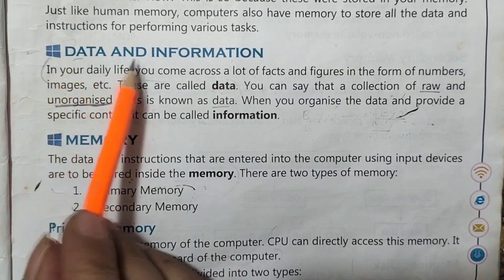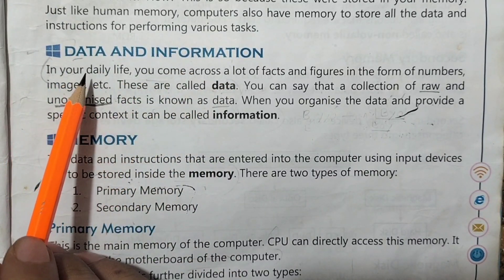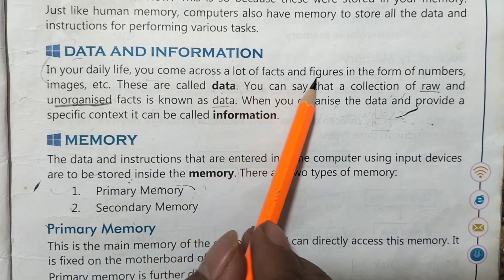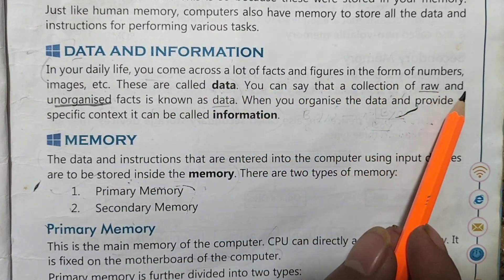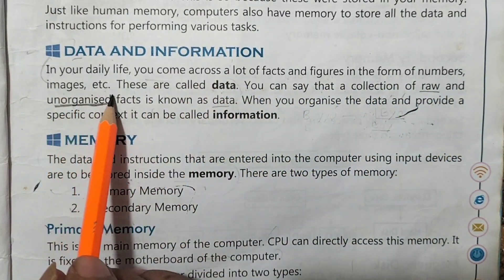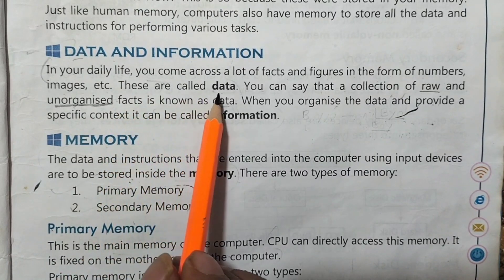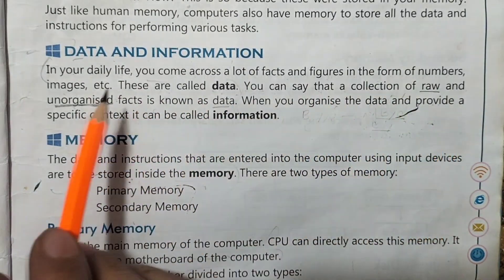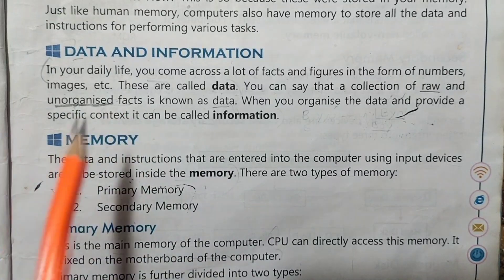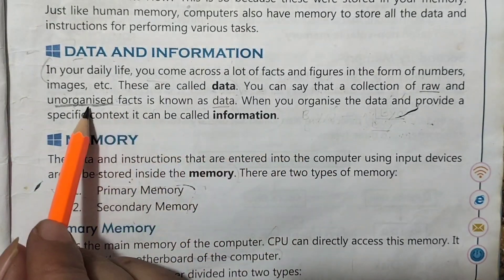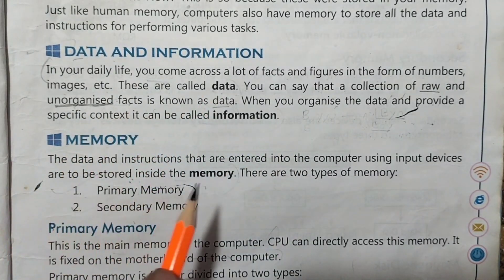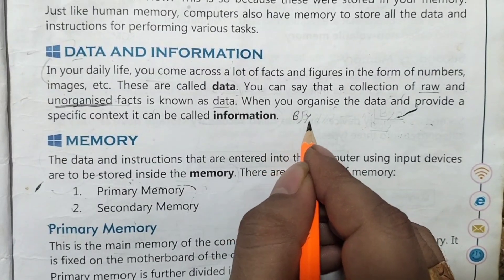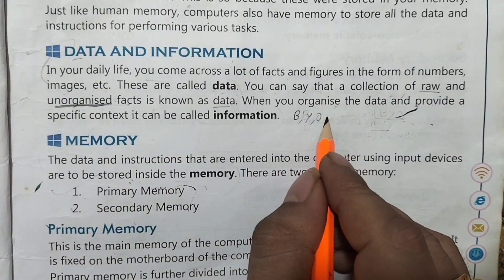What is data and what is information? In your daily life you come across a lot of facts and figures in the form of numbers, images, etc. These are called data. A collection of raw and unorganized facts — that is what we call data.